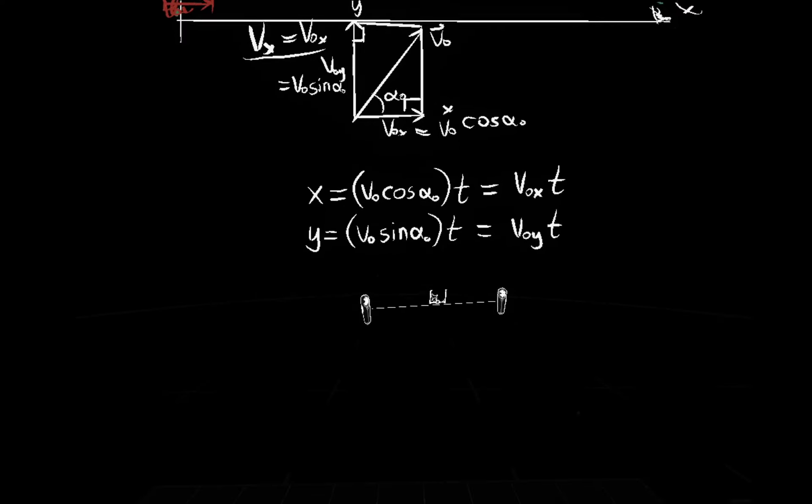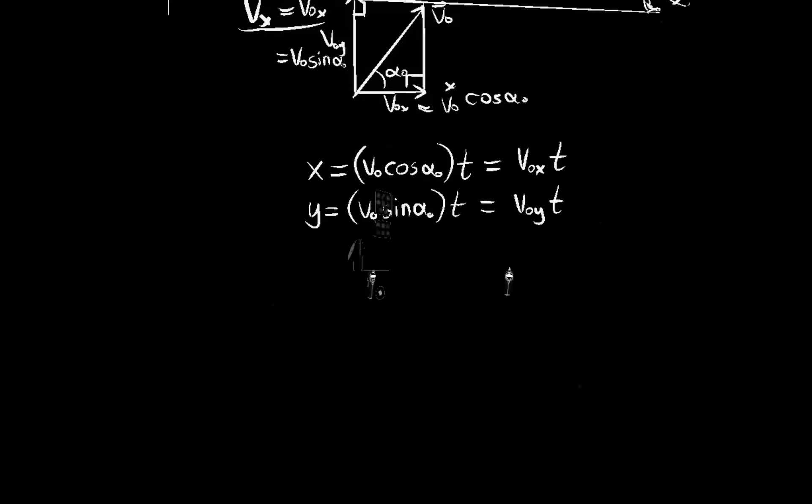And then we have expressions for velocity. The velocity v x, velocity in the x direction, is v naught cosine alpha naught. You're just taking the derivative with respect to t. So if you take the derivative of this with respect to t, you just knock the t off, and that is your answer.